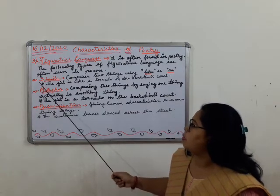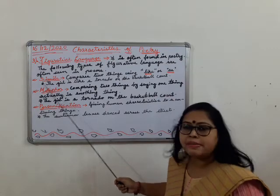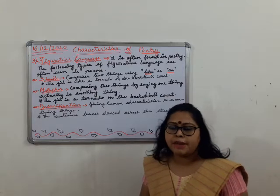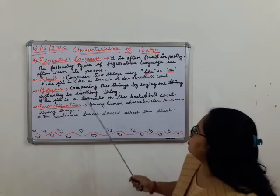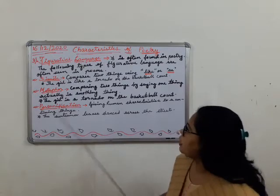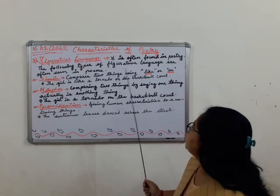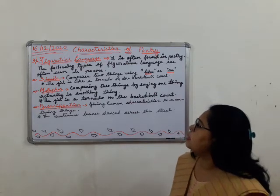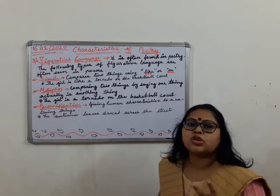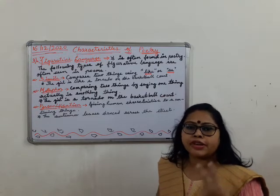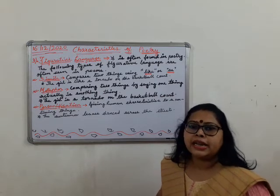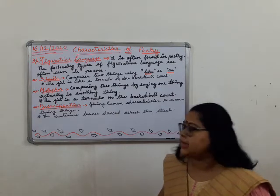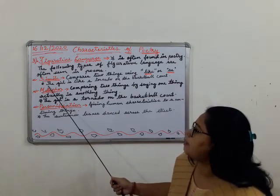The first type is simile. Simile is a figurative type of language that compares two things using 'like' or 'as'. That means simile is a type where two things or figures are compared using 'like' or 'as' — for example, 'like a girl' or 'as a girl'.